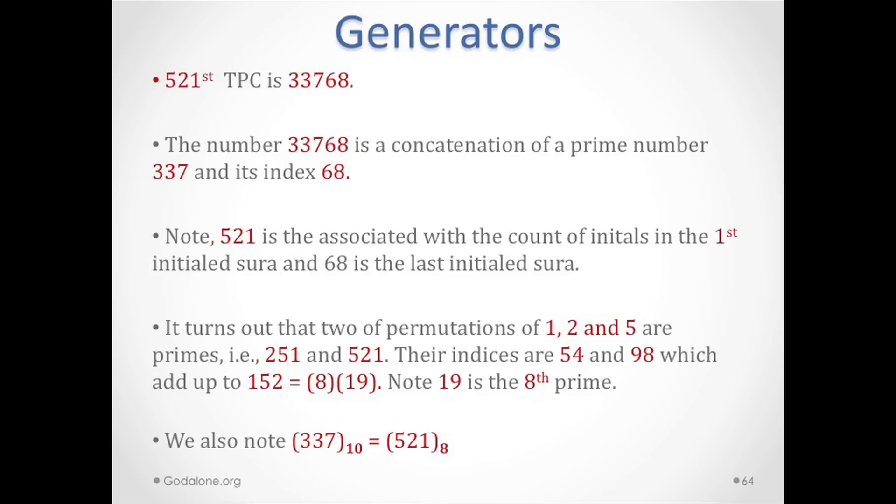It turns out that two permutations of 1-2-5 are 251 and 521—they're both primes, and their indices are 54 and 98, which sum to 152, which is 8 times 19. But remember, the eighth prime number is 19. We also know that 337 in base 10 equals 521 in base 8. This is about communication—when you have to listen to people to see their point of view.